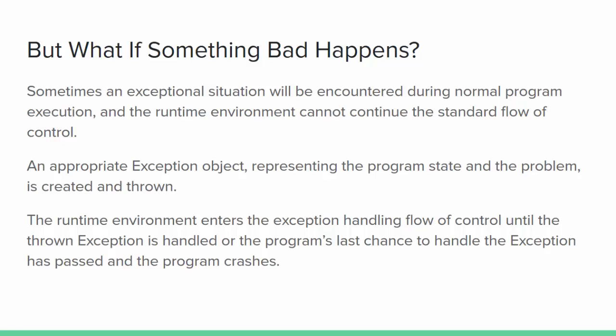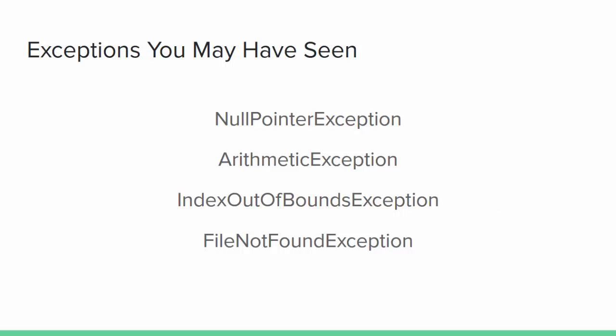Assuming nothing bad happens during the program, the program stays in its standard flow of control from start to finish. However, sometimes an exceptional situation comes up during execution and the program can't continue in the standard flow of control. When that happens, an exception object representing the problem and the program state is created and thrown. Examples of exceptional situations include null pointer exceptions, where the program tries to follow an object reference that doesn't point to an object; an arithmetic exception when attempting an invalid operation like dividing by zero; trying to access an invalid index position in an array or string results in an index out of bounds exception; and a file not found exception if the program can't find or open a specified file.